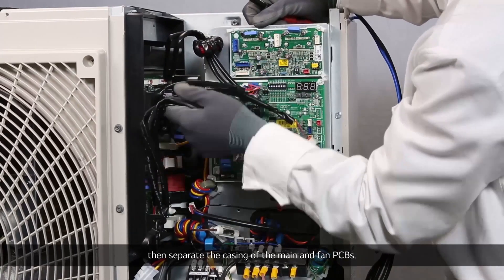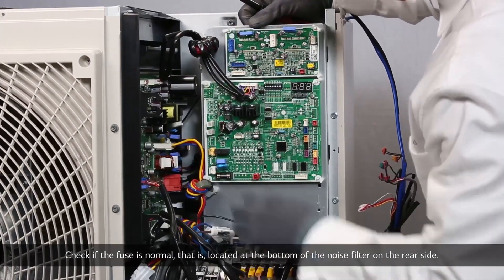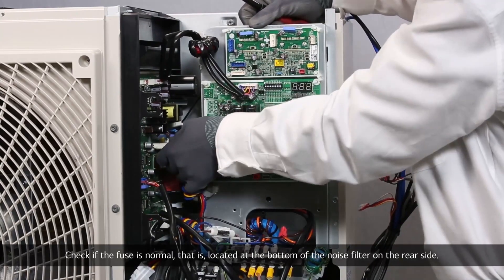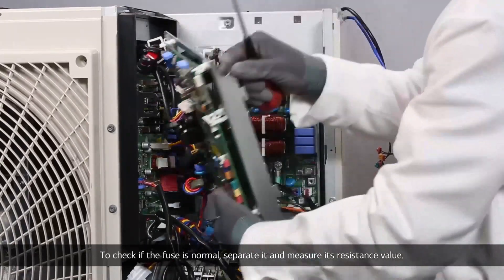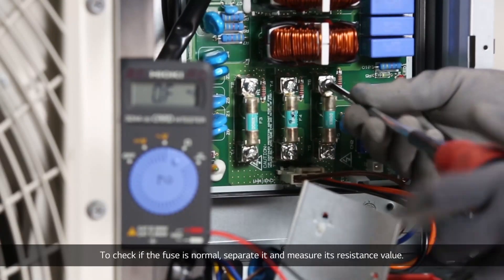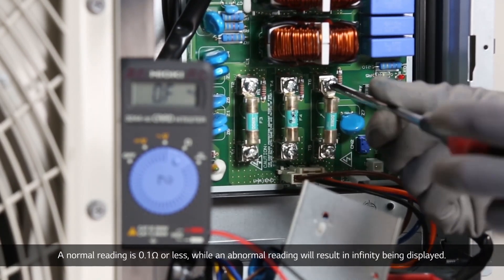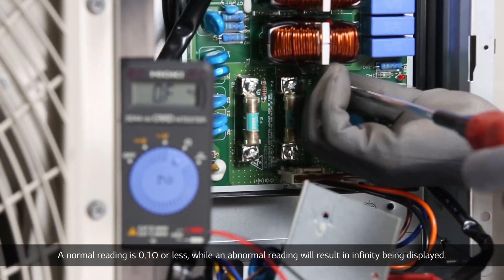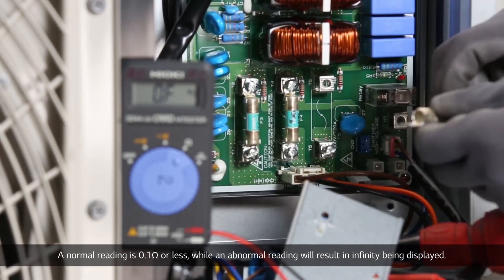Check if the fuse is normal that is located at the bottom of the noise filter on the rear side. To check if the fuse is normal, separate it and measure its resistance value. A normal reading is 0.1 ohm or less, while an abnormal reading will result in infinity being displayed.